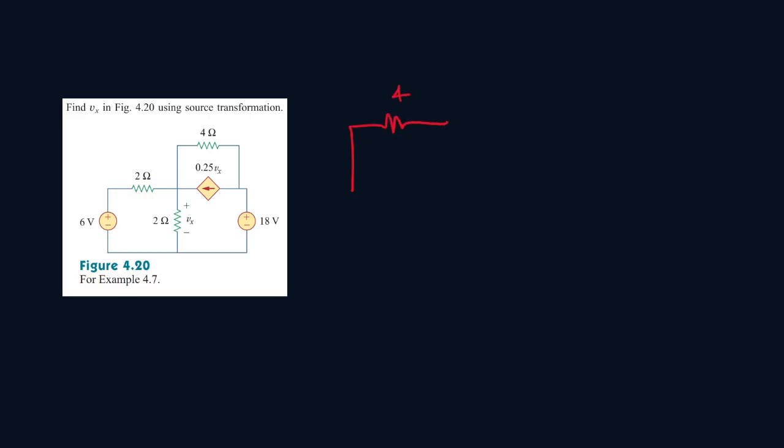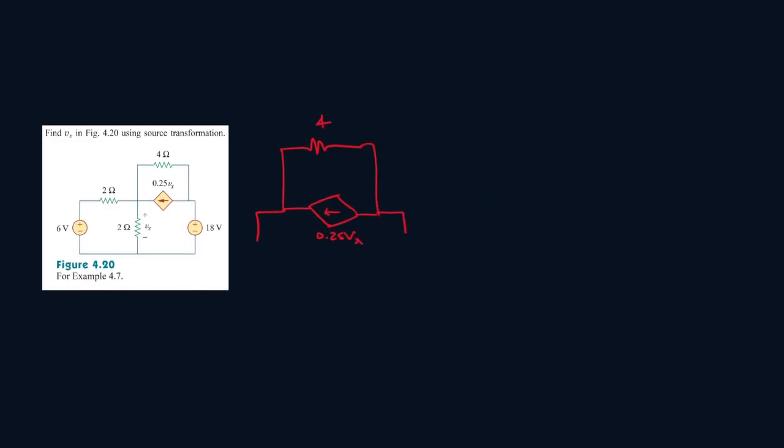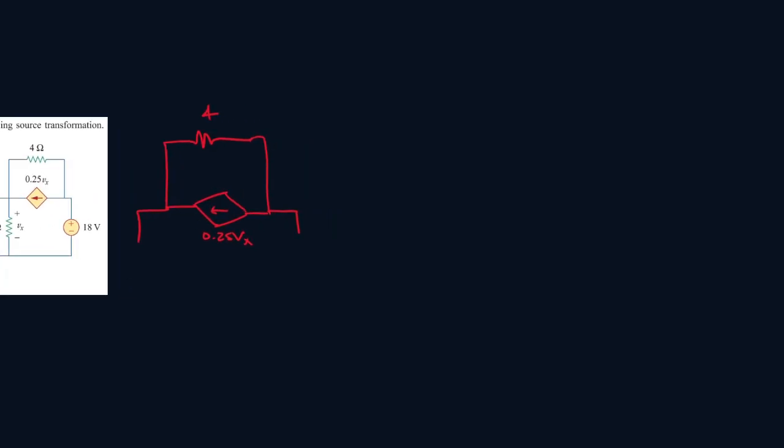We have a 4 ohm here, and then we have a dependent current source. And then this circuit continues. So let's try and combine these two. We know V is equal to I R. I is 0.25 Vx, and then R will be 4. So 0.25 times 4, that's just 1. So V will be just Vx.